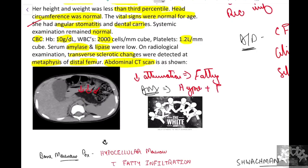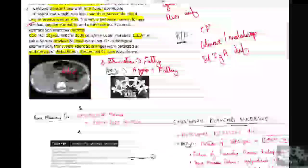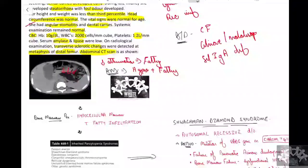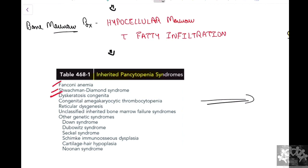Now we can make a diagnosis: a very young kid presenting with bone marrow failure — hypocellular bone marrow — leads us to think of inherited pancytopenias. With these clinical features along with pancreatic exocrine insufficiency and growth retardation, we can think of Shwachman-Diamond syndrome. Other inherited pancytopenias include Fanconi anemia, dyskeratosis congenita, congenital amegakaryocytic thrombocytopenia, and genetic syndromes like Down syndrome, Noonan syndrome, and others.